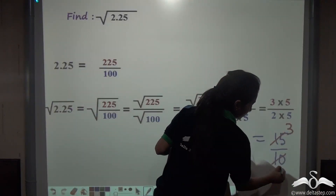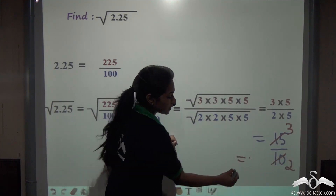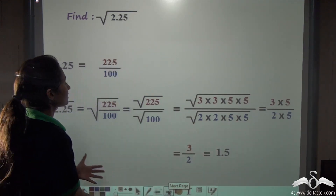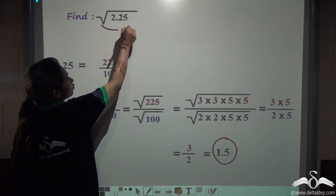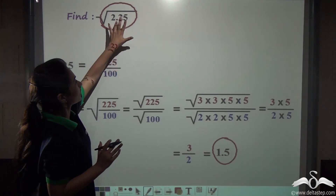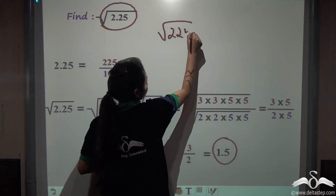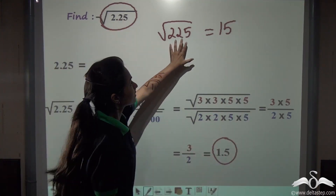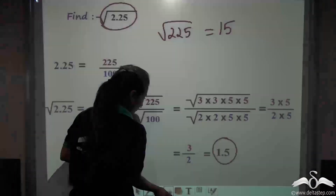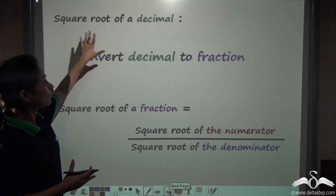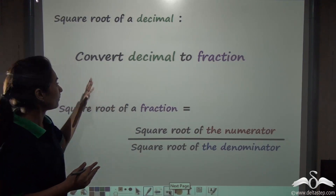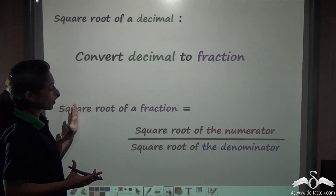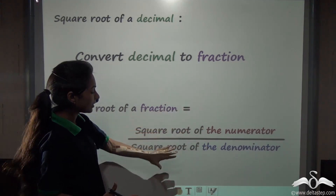Now cancelling, we get 3 by 2, which is 1.5 when converted into a decimal. So 1.5 is the square root of 2.25. Notice that if the decimal number were not there and we just had root 225, the answer would be 15 — so only the decimal point changes; the numerical value of the square root is the same. To summarise: the square root of a decimal can be found either by the long division method, or by converting the decimal into a fraction and then applying the method of square rooting a fraction — taking the square root of the numerator and denominator separately.